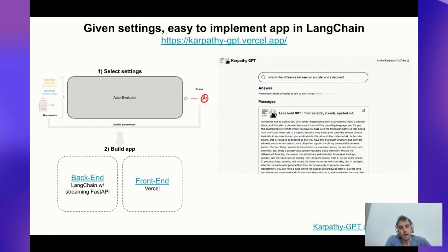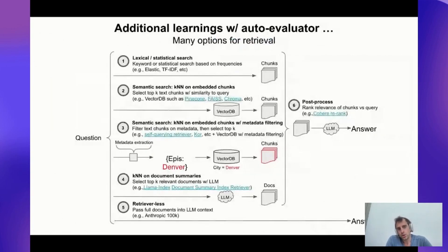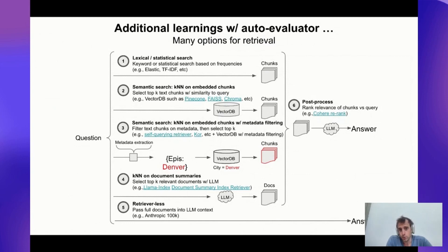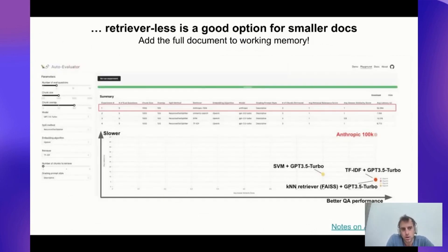There are lots of different ways to approach retrieval in retrieval-augmented generation applications. Of course there's lexical or statistical search, there's semantic search which many are familiar with, and also newer methods that use semantic search with metadata filtering — the self-query retriever is one very interesting one in LangChain. Also worth highlighting: newer models with very large context sizes, like Anthropic's 100k model, let you stuff documents in together. And post-processing with Cohere's re-rank is a very interesting approach — we've integrated many of these options with Auto Evaluator.